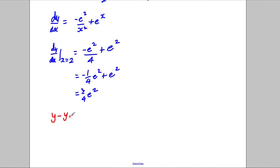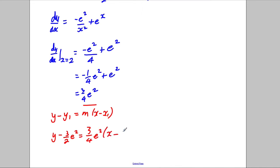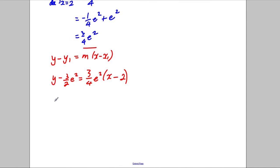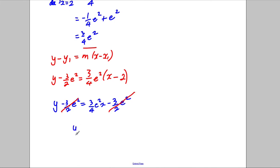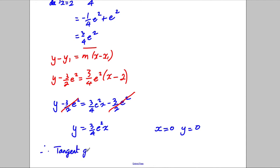Using y minus y1 equals m times (x minus x1): y minus 3/2 e squared equals 3/4 e squared times (x minus 2). Multiplying out: y minus 3/2 e squared equals 3/4 e squared x minus 3/2 e squared. Adding 3/2 e squared to both sides gives y equals 3/4 e squared x. When x equals 0, y equals 0, therefore the tangent goes through the origin, as required.